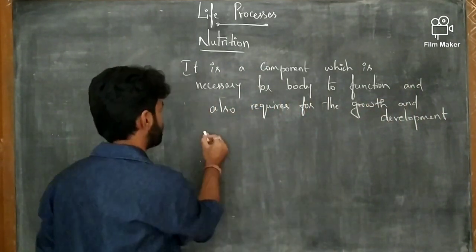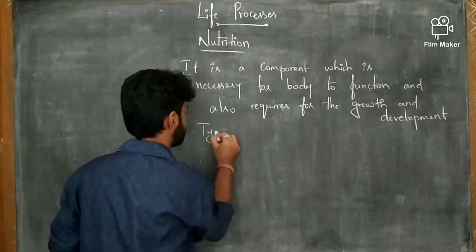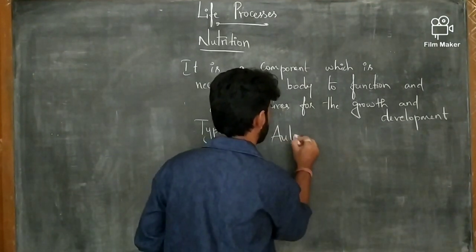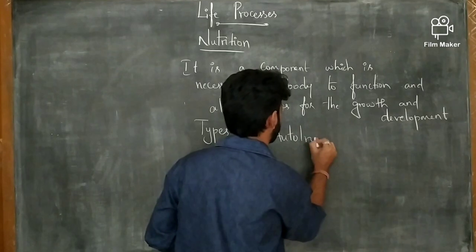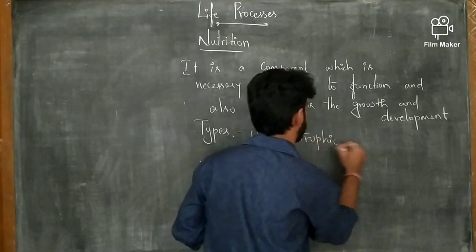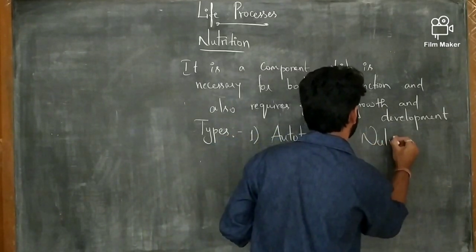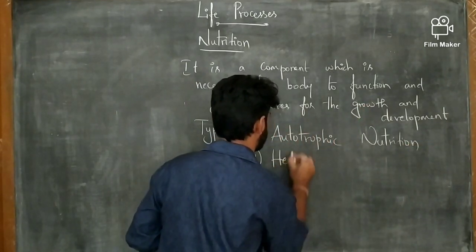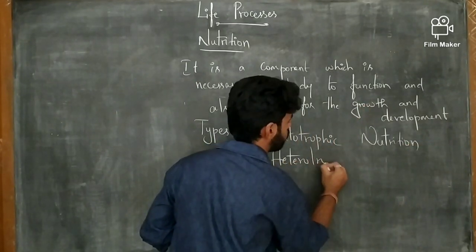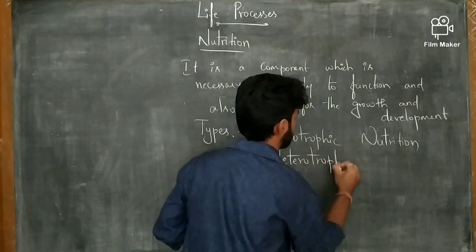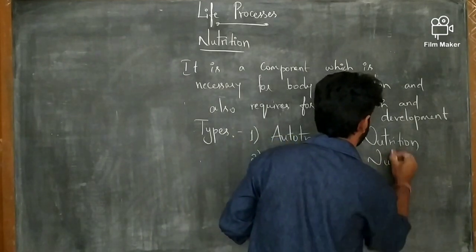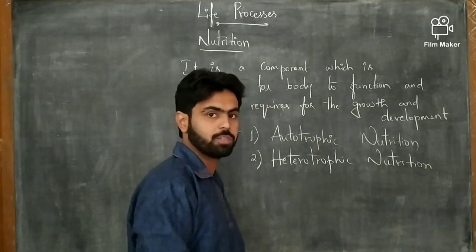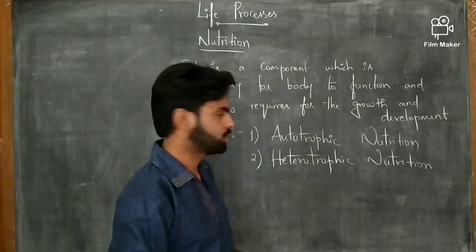So what are the types of nutrition? We have two types of nutrition. One is autotrophic nutrition and the second one is heterotrophic nutrition. There are two main types and apart from these two types we have various subtypes.